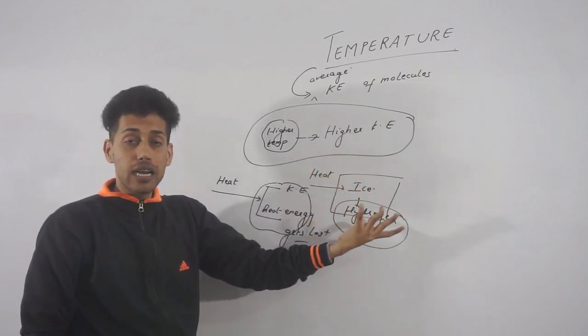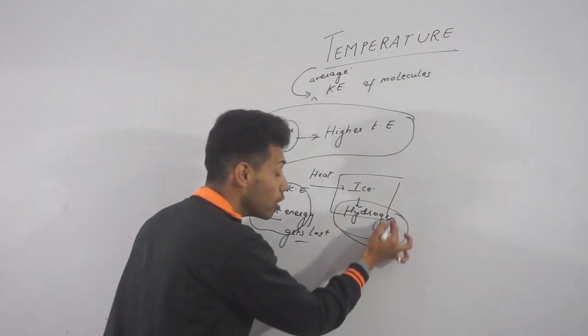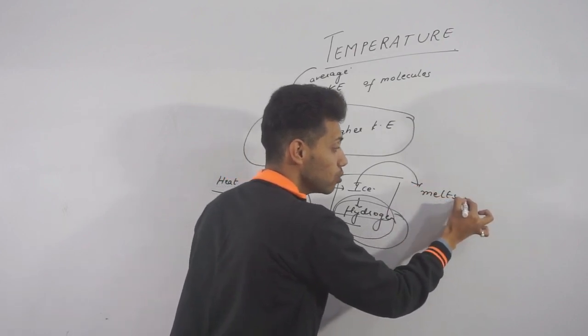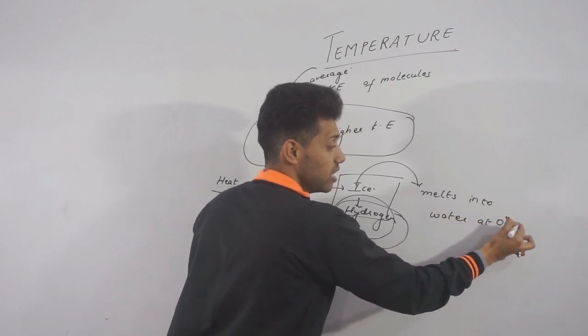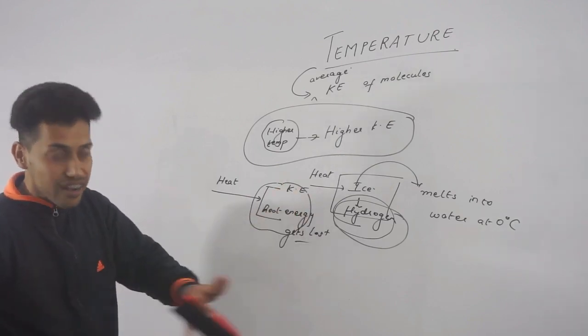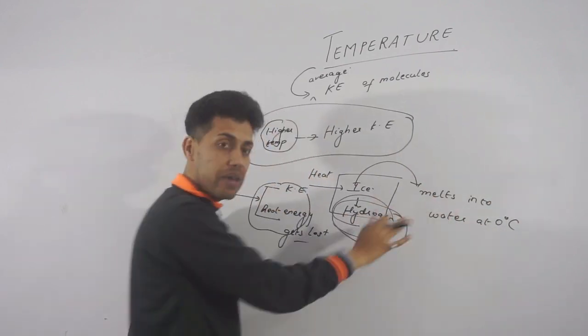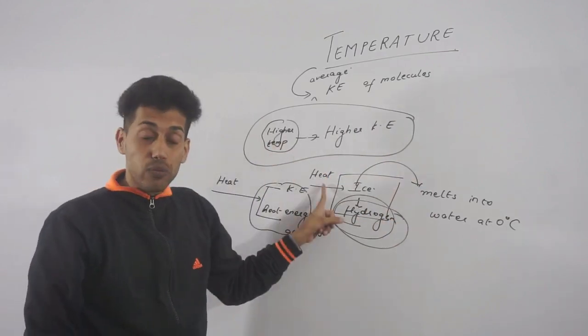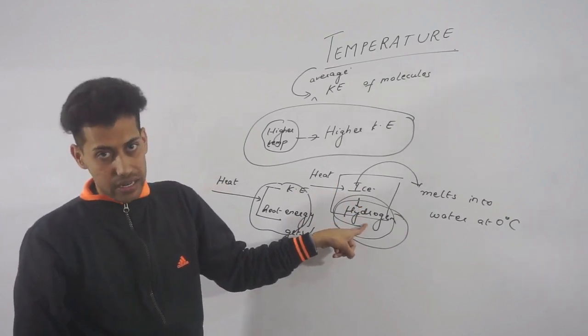having broken all the hydrogen bonds, now whatever the molecules are left, now the heat energy will supply them kinetic energy. So unless all the hydrogen bonds, unless all the ice melts into water at 0 degree Celsius, temperature is not gonna boost up, it's not gonna rise. But once all the ice melts into water, then yes, your temperature starts rising again. Because now whatever the heat energy you are supplying is justly converted into kinetic energy.